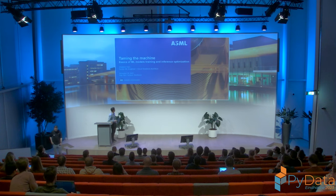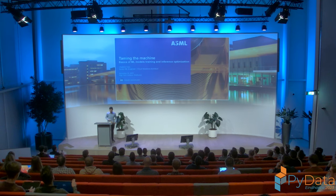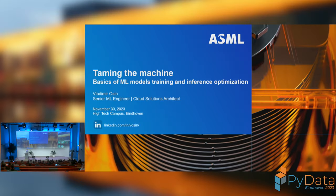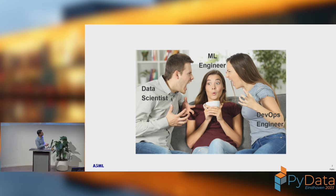Thank you for the introduction. I have this kind of double title: ML engineer and cloud solution architect. I work between different teams, like data science and DevOps teams, working to build a nice, fruitful collaboration. In real life, if you ever tried to explain to data scientists why security is important, or to DevOps engineers why data scientists need production data in a development environment, I'm basically in the middle there, trying to connect the dots together.